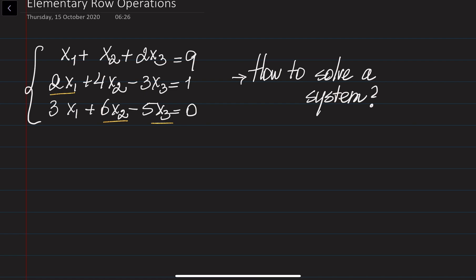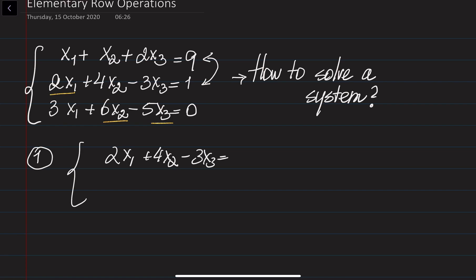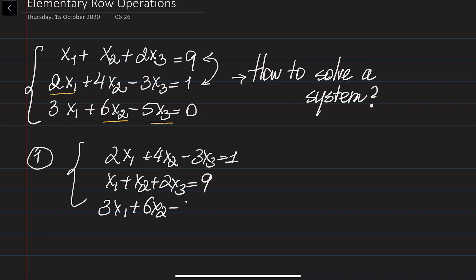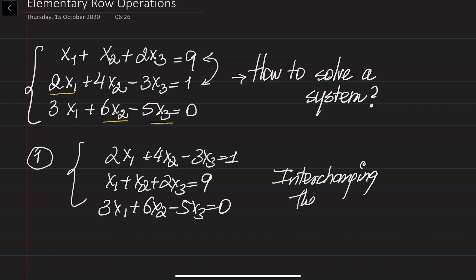The first operation I could do is interchange some of the equations. For example, I could interchange the first equation with the second one. So in this case it's going to be: 2x1 + 4x2 - 3x3 = 1, x1 + 2x3 = 9, x1 + 6x2 - 5x3 = 0. Basically, interchanging the equations.